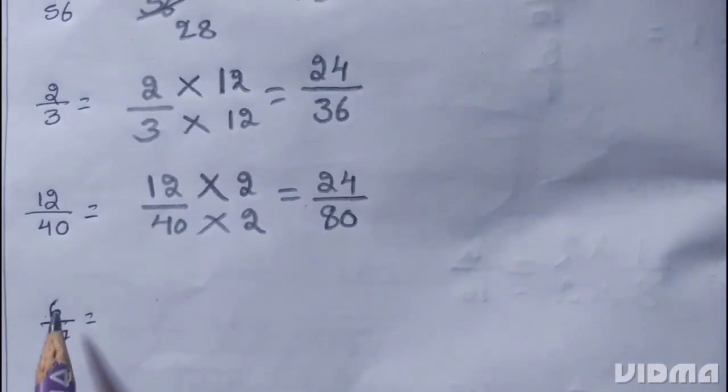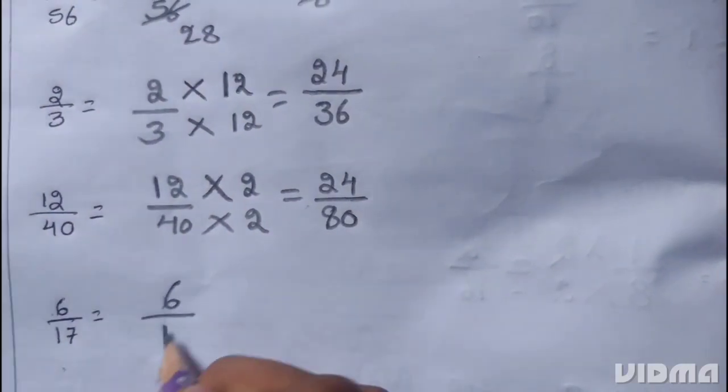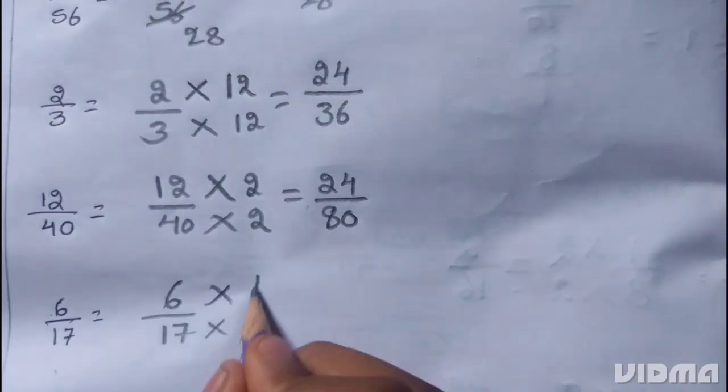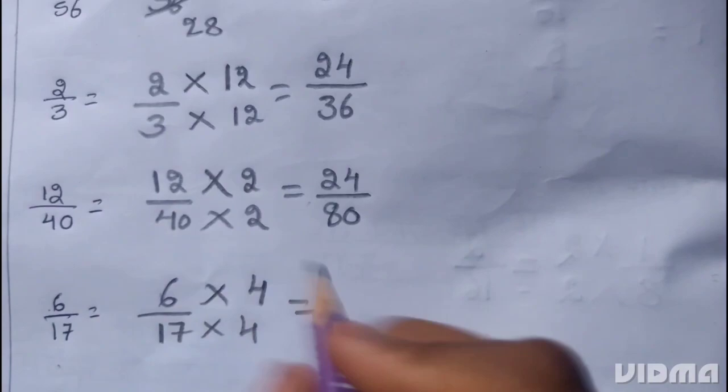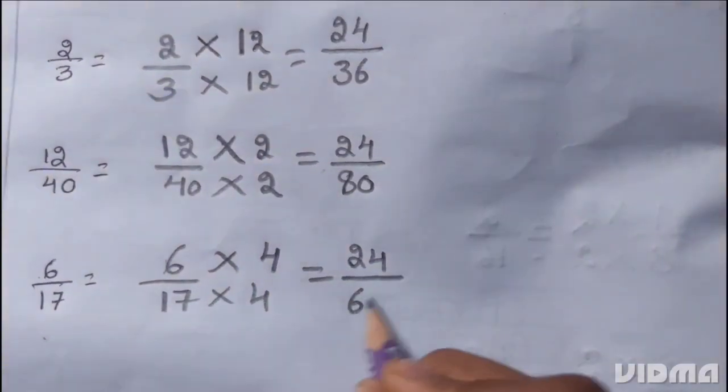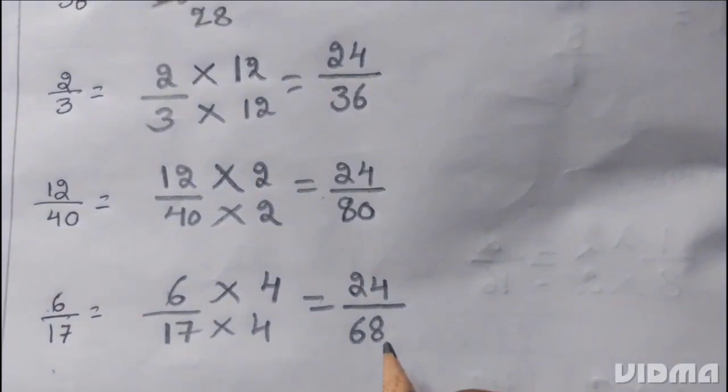Next, 6 by 17. 6 multiply 4, 17 multiply 4. 6 4s are 24, 17 4s are 68. 24 is the numerator, 68 is the denominator.